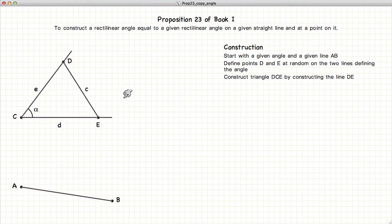Now if we use the methods from Proposition 22, which says if we have three line segments we can construct a triangle, here we have three line segments E, C and D. So we will construct a triangle onto the line segment AB.